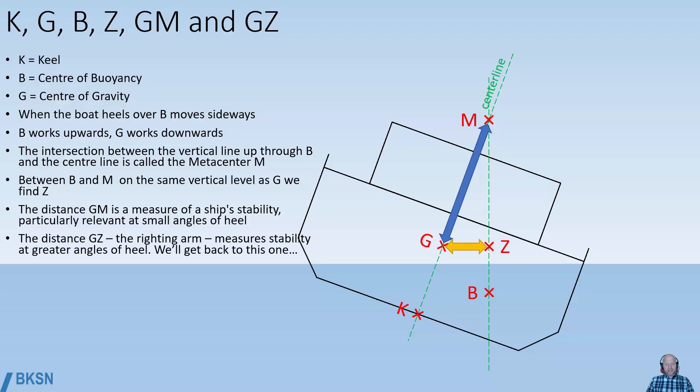The distance GZ, which is known as the righting arm, measures stability at greater angles of heel, and we will return to this in a little while.